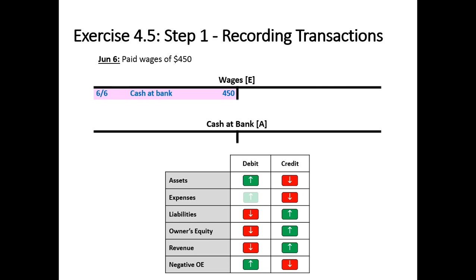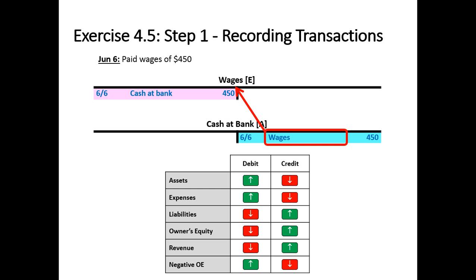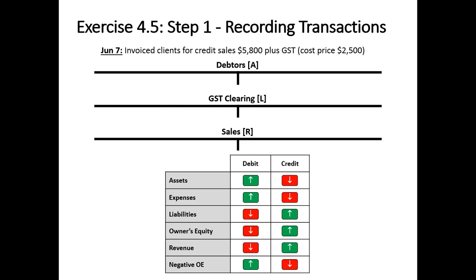Paid wages of $450. We've got a debit to wages as an expense going up, and a credit to cash at bank because an asset is decreasing. The wages ledger needs to reference cash at bank, and the cash at bank credit must reference the wages ledger.